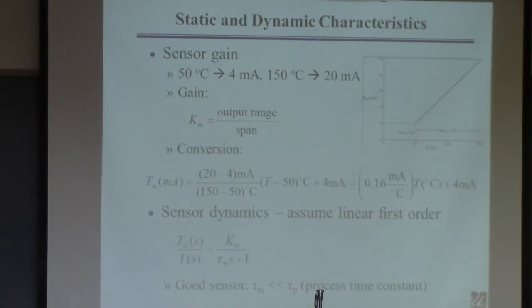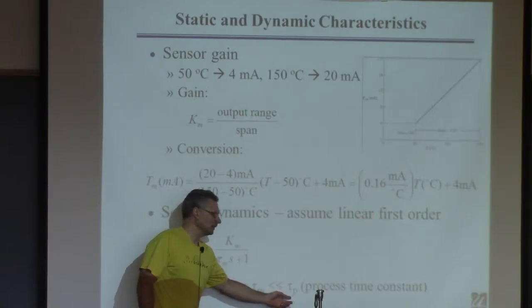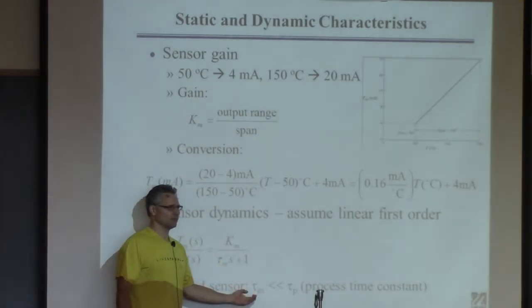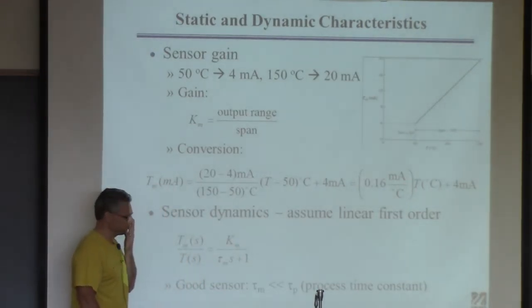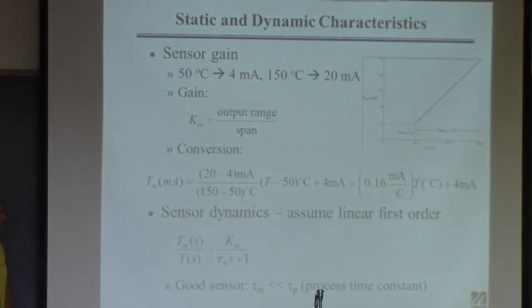a lot smaller than the process time constant. So if the characteristic time of your process is 60 minutes, a thermocouple will have a time constant of a couple seconds—it's going to be way faster. If you start to get sensors or final control elements with time constants that approach the process time constant, it's going to be a problem because you can't measure and actuate fast enough. It limits your ability to do control.